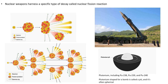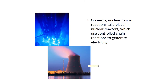Plutonium-238 is a by-product of Cold War weapons production that generates a lot of warmth and powers NASA's most adventurous robots in the cold dark depths of space. On Earth, nuclear fission reactions take place in nuclear reactors which use controlled chain reactions to generate electricity. However, there is a very interesting story about a natural nuclear fission reactor.